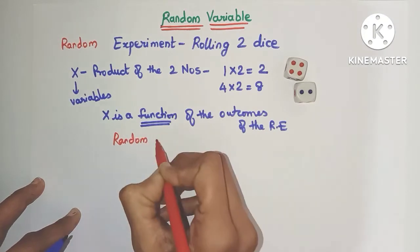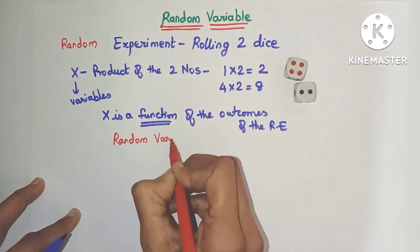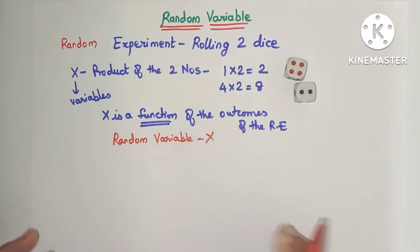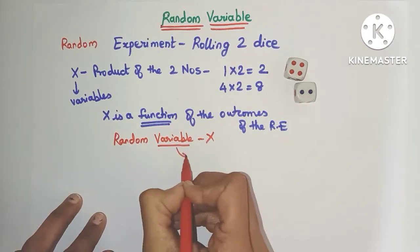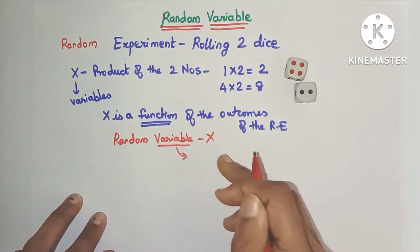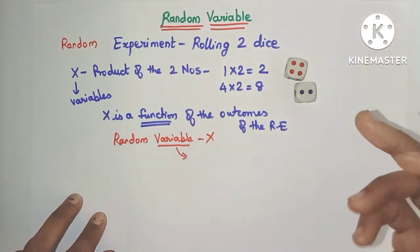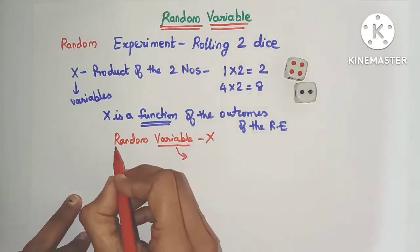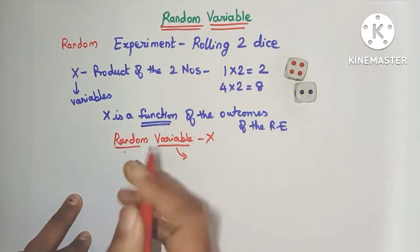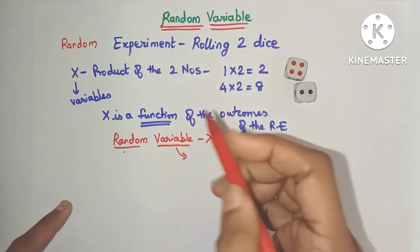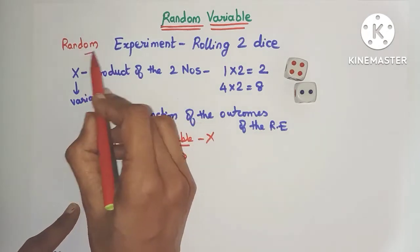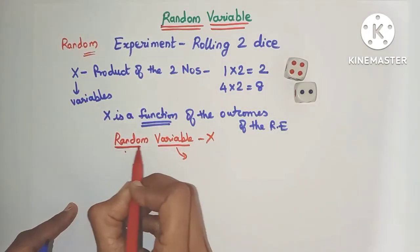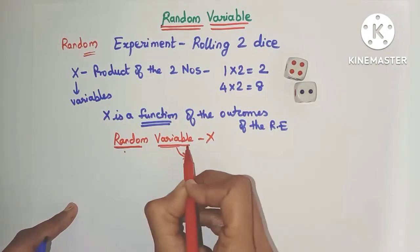So x is a random variable. Why is it a variable? Because x's value varies as the outcome varies. And it is random because it is dependent on the outcome of a random experiment. That's why it's known as a random variable.